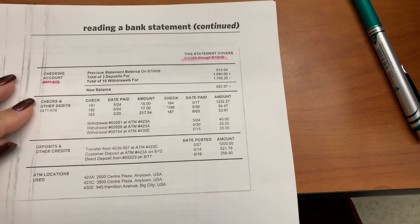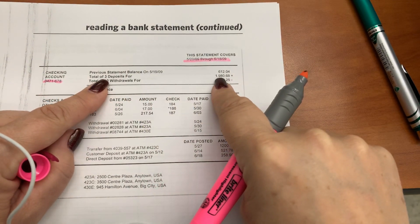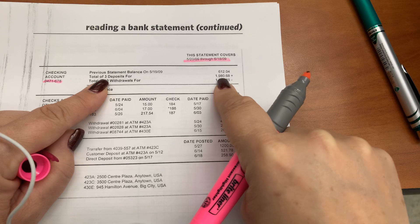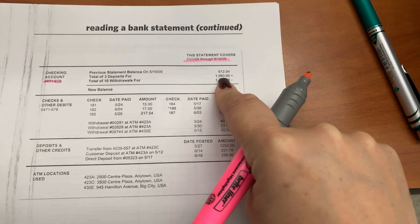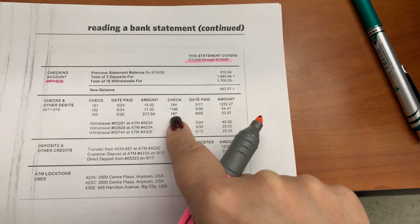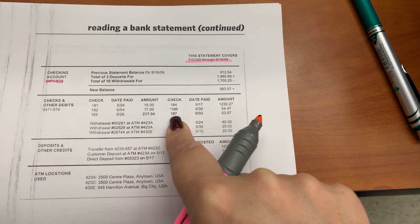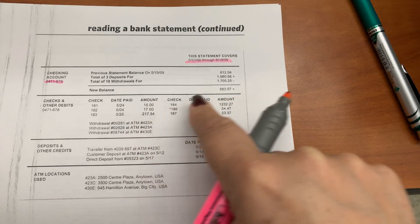There were three deposits made for a total of $1,980.68, and we have six checks that have cleared, and the total amount of the cleared checks, you need to add those up.